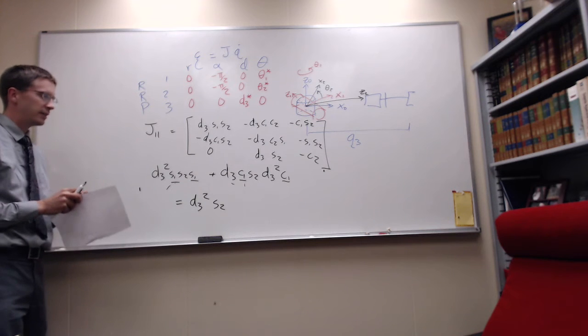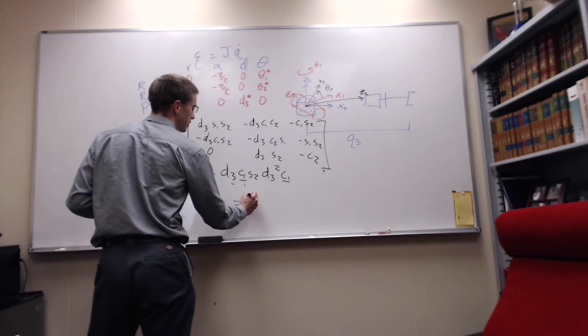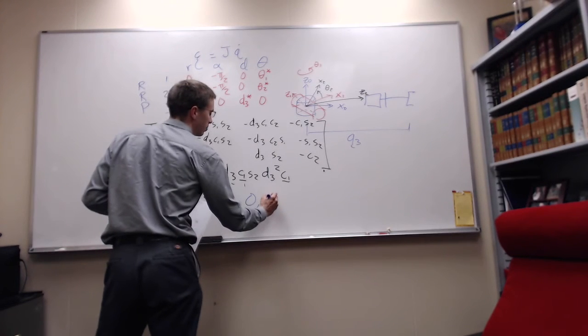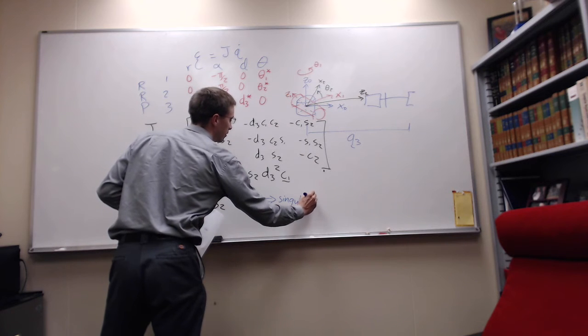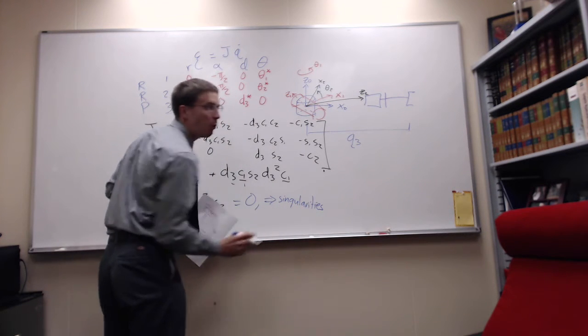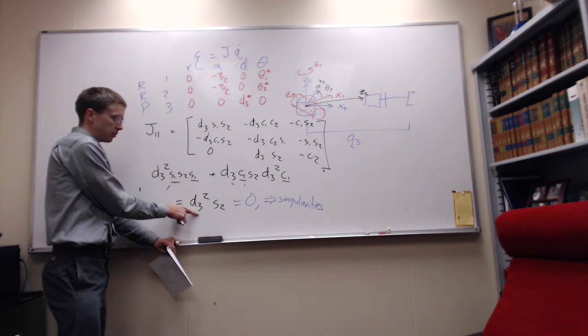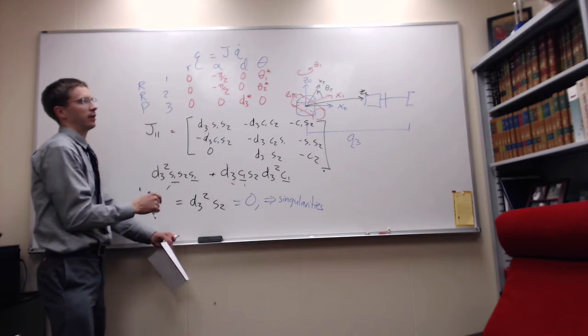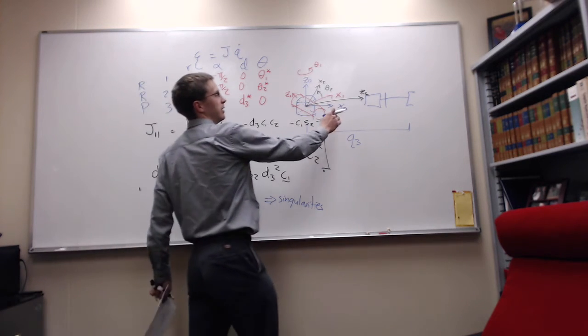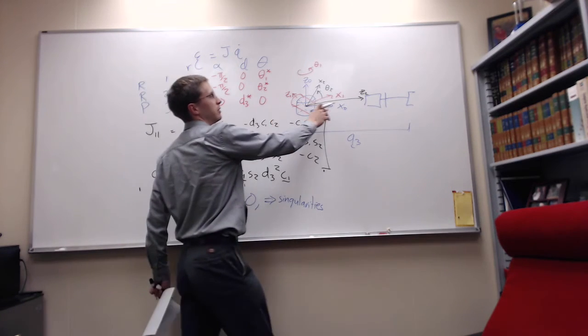So this is saying that I have singularities where, if this equals to 0, then we have singularities. What does that mean? Well, in this case, if this D3, if its absolute value is 0, then I have a singularities. In this case, that's when this distance of the prismatic joint is reduced to 0.